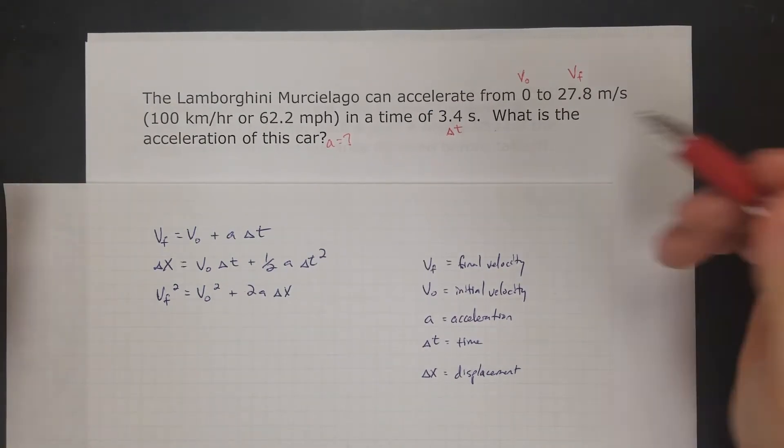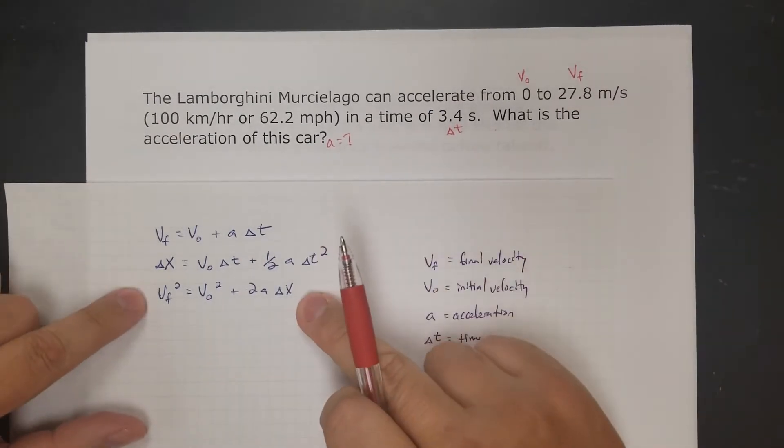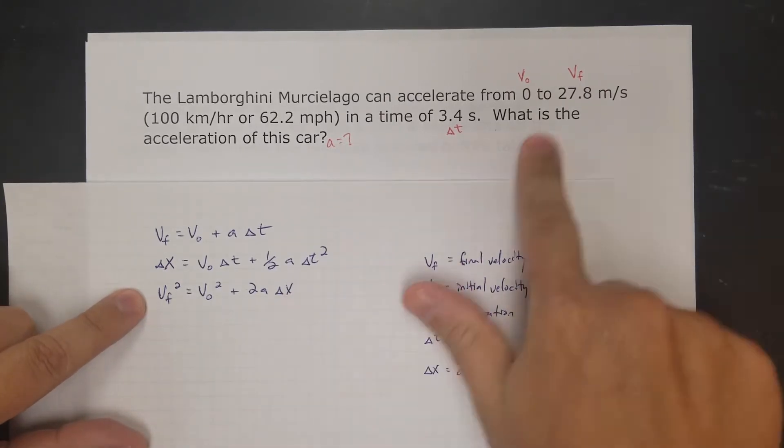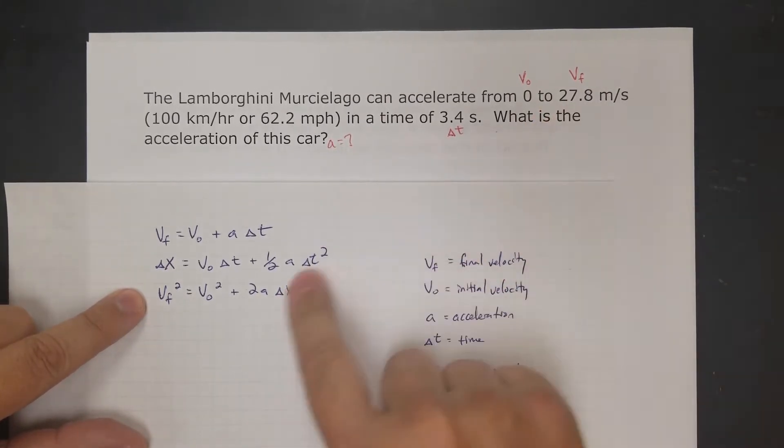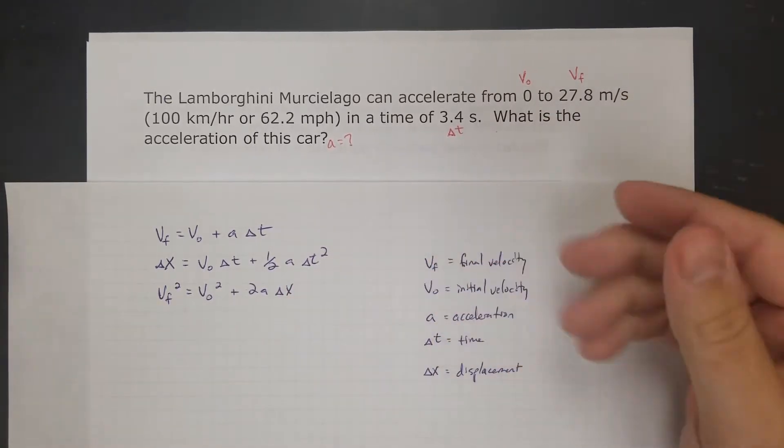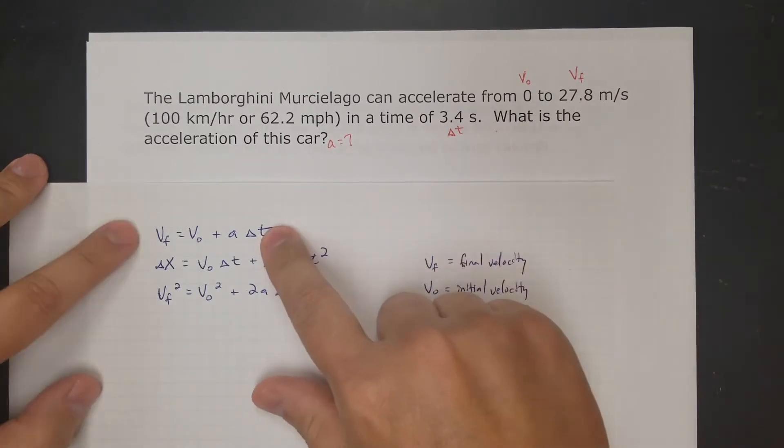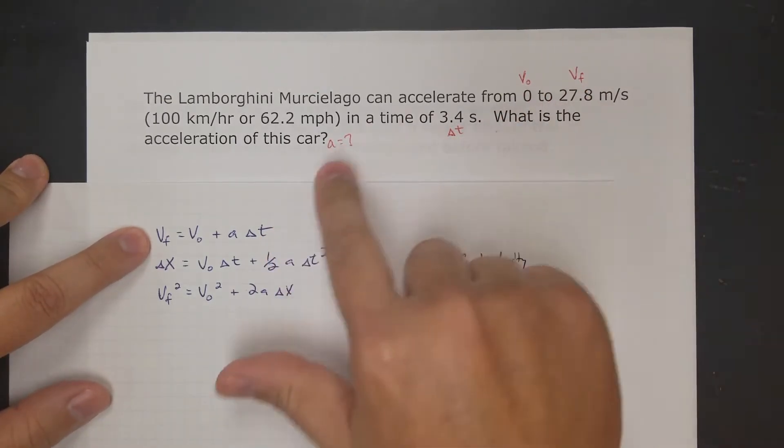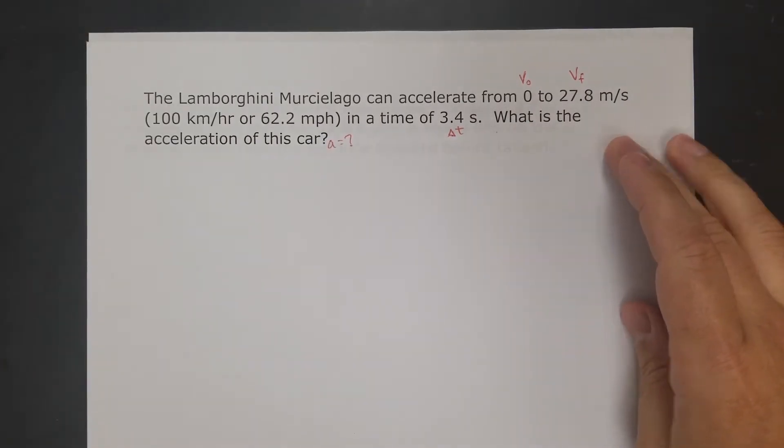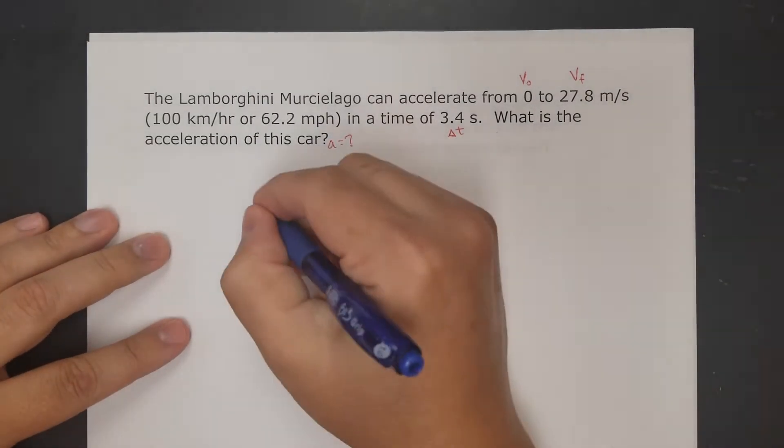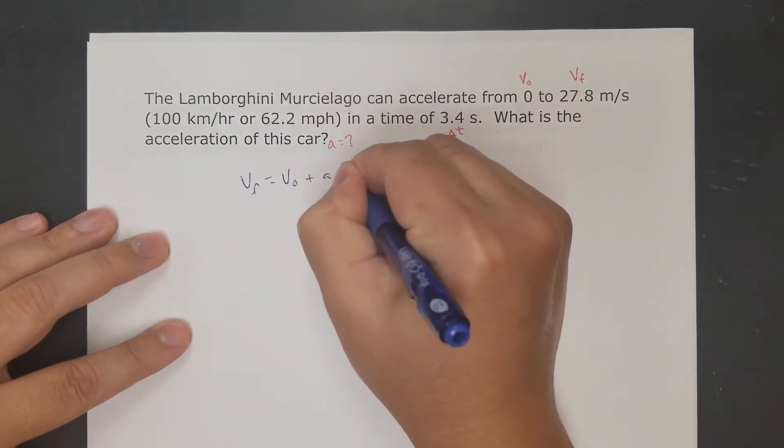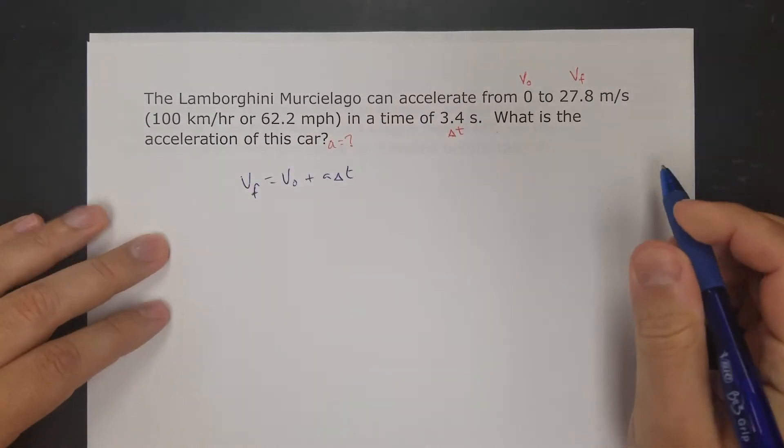If you were just to look at this, you can tell this problem doesn't have delta x, the displacement, so you can't use this equation. You need to figure out what you're going to use first. I look at this and I know I'm going to use the first equation because final, initial, time, acceleration - this has everything I need. So let's go solve. V_f equals V_0 plus a delta t. There's my equation.